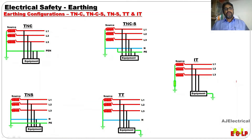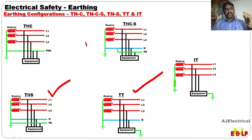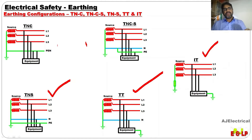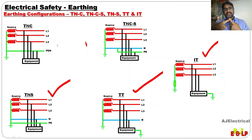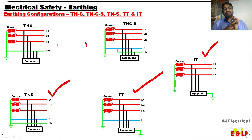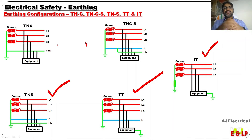About the earthing configurations, there are TNC, then TNCS, then TNS — I am just showing the diagrams, but we will take one by one in future classes — and IT. Please note the letters: TNC, then S, then both T, then I is on the source side and T is on the other side. We will take every letter for detailed study.